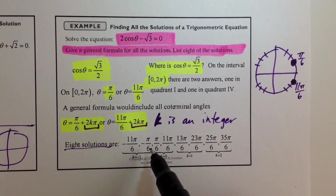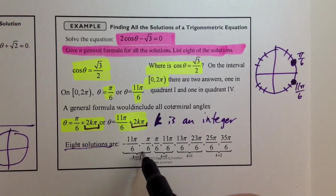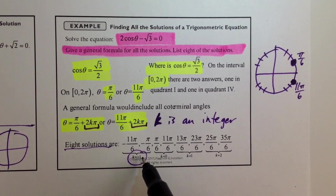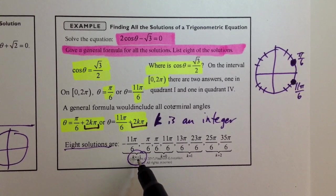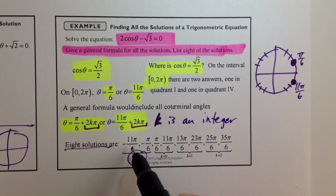But if k is negative 1, there we go. So, k is negative 1. It's really hard to see. When k is negative 1, you get these two angles.